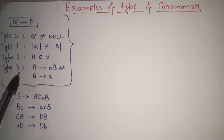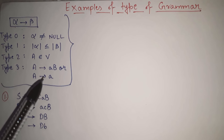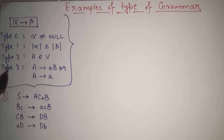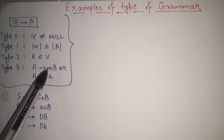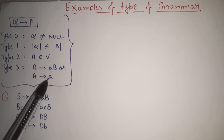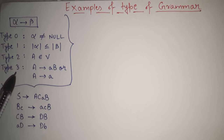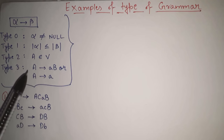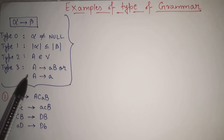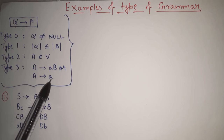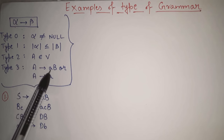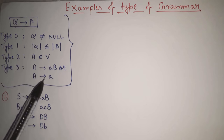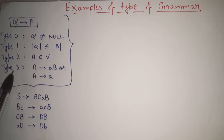What is type 3? The main condition of type 3 is that it is regular grammar — the most restricted grammar. Type 3 allows only: capital A gives aB, or A gives a. That means one variable giving only a terminal, or one variable giving the combination of a terminal and a variable. This is the only possibility valid in case of type 3, regular grammar.